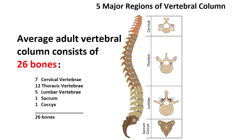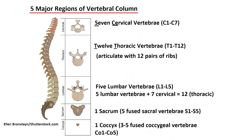After the bones of the sacrum and coccyx fuse, the typical vertebral column consists of 26 bones, which anatomists divide into five main regions — and yes, you're going to want to remember these five regions for your anatomy exams.